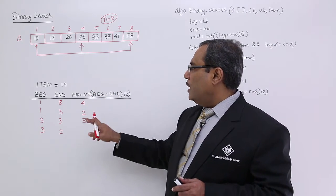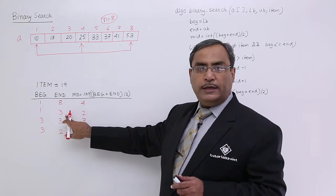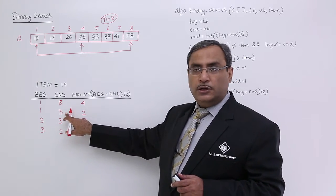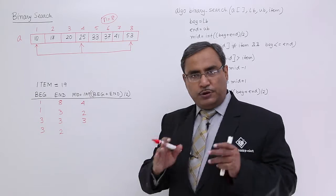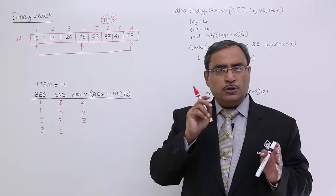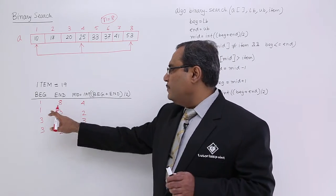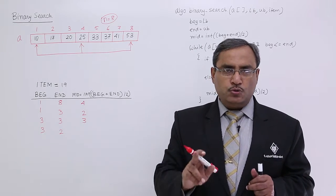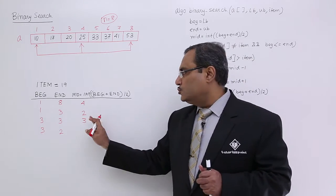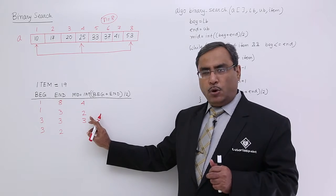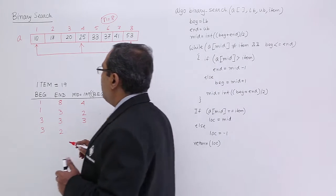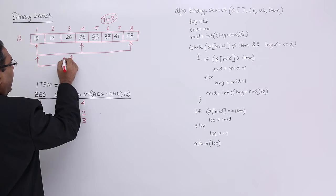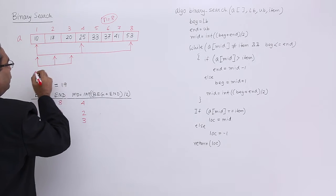So, I shall make end equal to 3, which is mid minus 1. I shall confine my range to between 1 and 3. What is the mid in that case? 1 plus 3 is 4, divided by 2 is 2 — integer of that is 2. So I shall be getting 2 for mid. My range will be squeezed to 1, 2, 3 and my mid position will be 2.